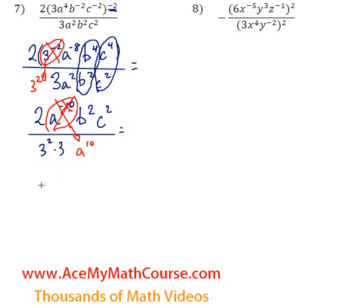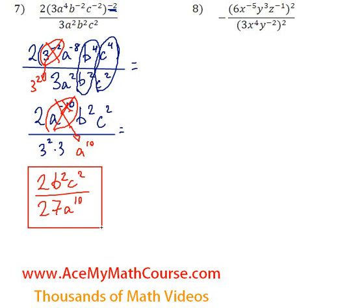So now let me just simplify everything. And we have 2b squared, c squared all over 3 squared is 9 times 3, 27, a to the 10. And that's as far as we can go simplifying this. So we're done.